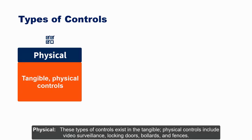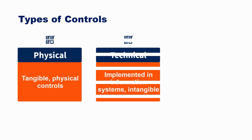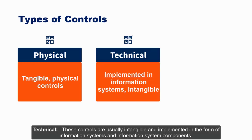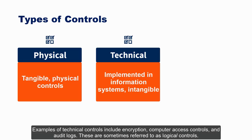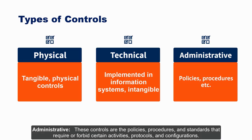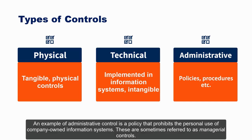There are three types of controls: physical, technical, and administrative. Physical controls exist in the tangible world and include video surveillance, locking doors, bollards, and fences. Technical controls are usually intangible and implemented in the form of information systems — examples include encryption, computer access controls, and audit logs; these are sometimes referred to as logical controls. Administrative controls are policies, procedures, and standards that require or forbid certain activities — an example is a policy prohibiting personal use of company-owned information systems; these are sometimes referred to as managerial controls.